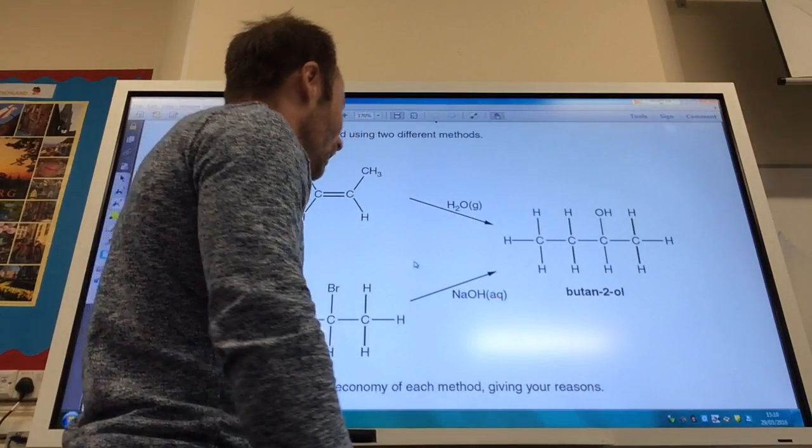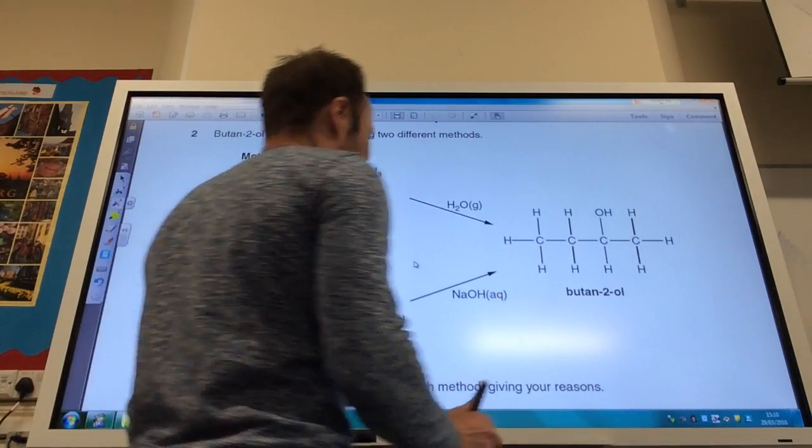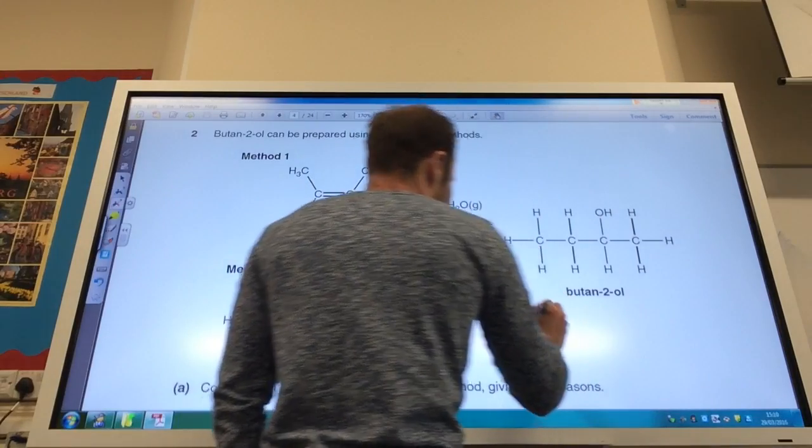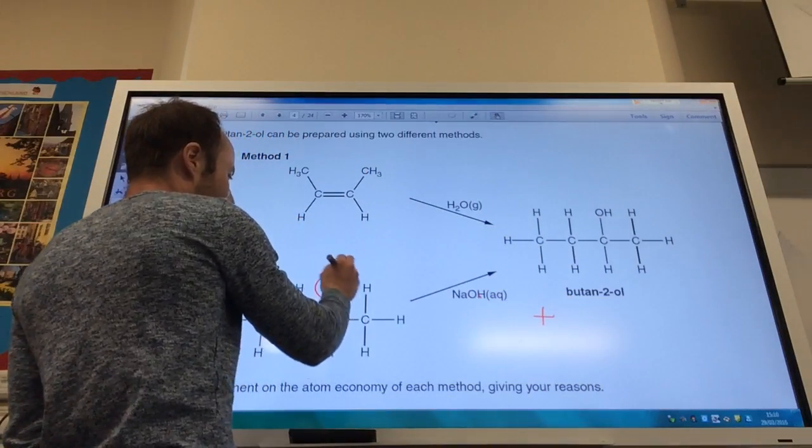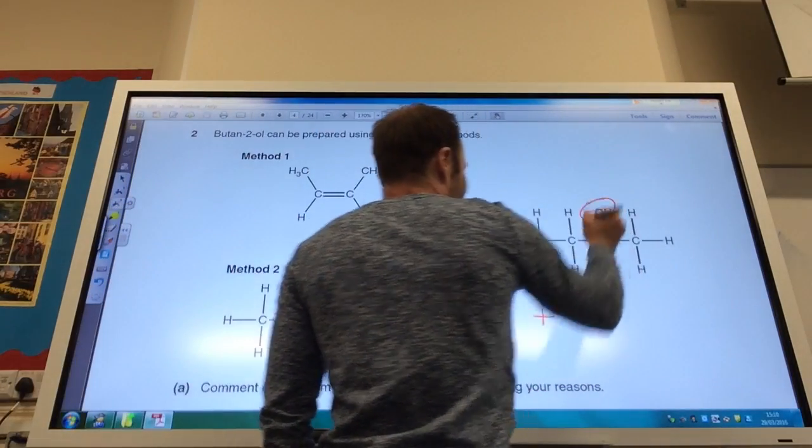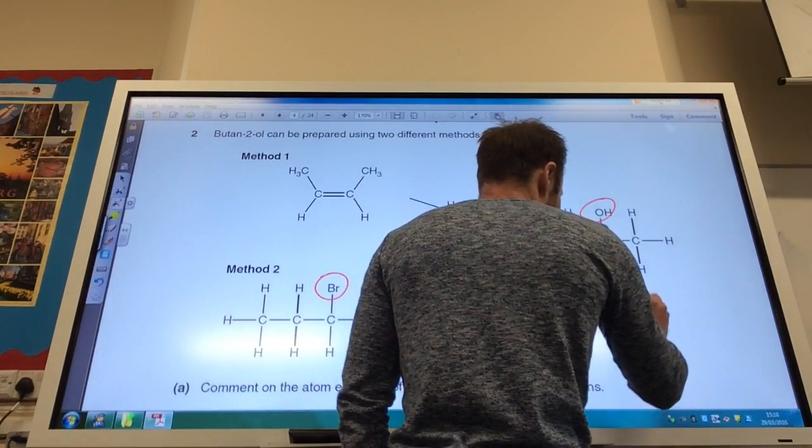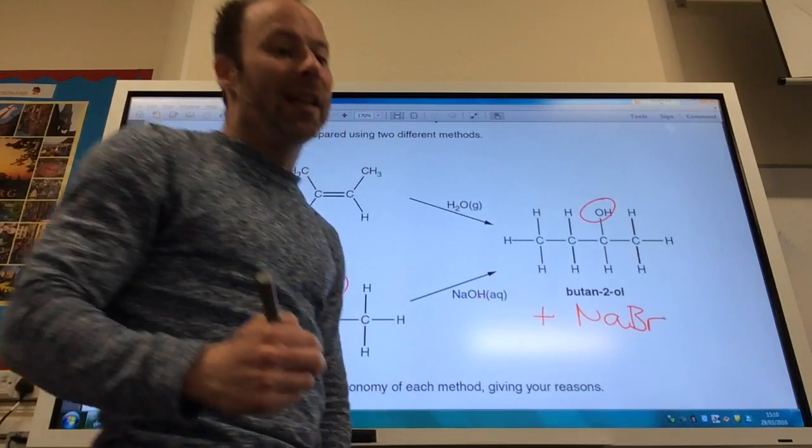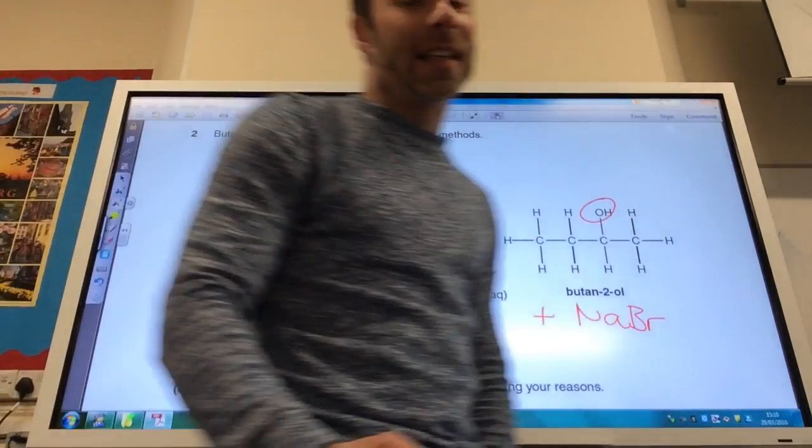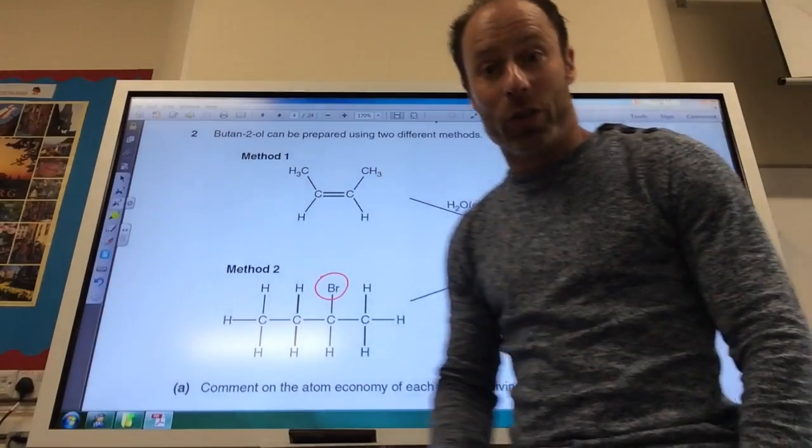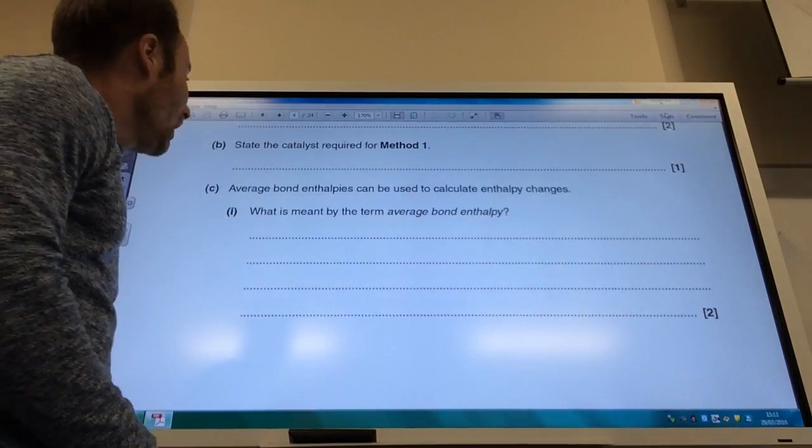For method two, my other product that I'm going to make will be—I replace that bromine there with an OH group. So my other product is going to be sodium bromide. And therefore it is less than 100% atom economy because two products are produced from that one.